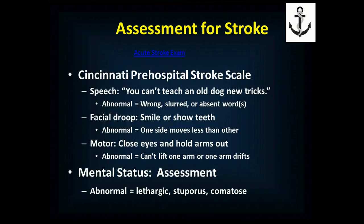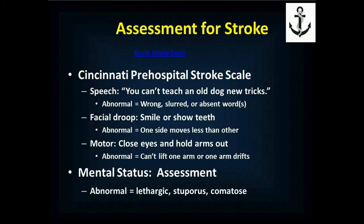The easiest way to assess for stroke is the Cincinnati Pre-Hospital Stroke Scale — speech, facial droop, and motor. For facial droop: ask them to smile or show their teeth; abnormal is one side moves less than the other. For speech: ask them to say a phrase like 'you can't teach an old dog new tricks'; abnormal is wrong words, slurred words, or dropped words. For motor: ask them to close their eyes and hold their arms out; abnormal is they can't lift one arm or one arm drifts down. This picks up about 85% of strokes. Also do a mental status assessment — abnormal is not at their baseline, lethargic, stuporous, or completely comatose.